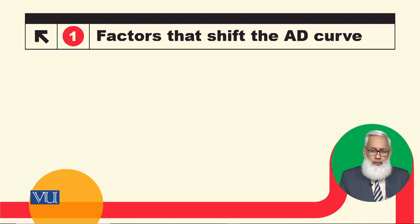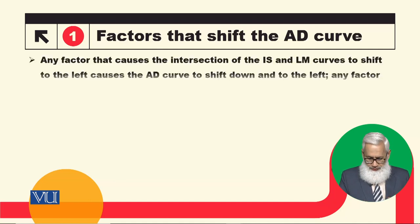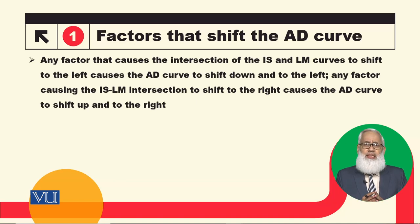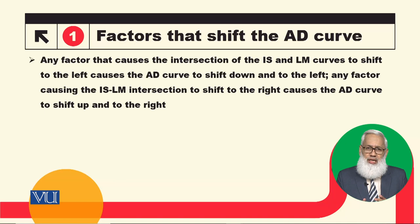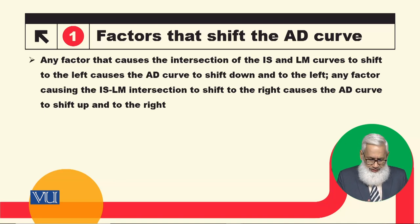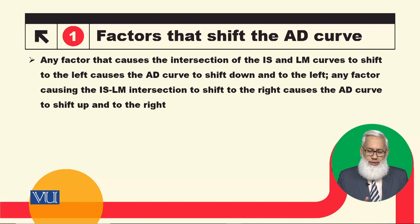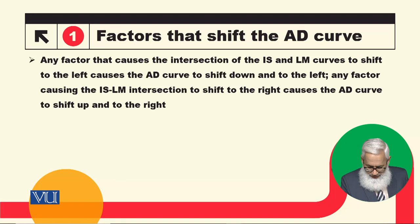So today we will look at those factors. Aggregate demand curve हमने कैसे derive किया था? By the intersection of the IS and LM curves. So any factor that causes the intersection of the IS-LM curve to shift to the left — let me draw this again.